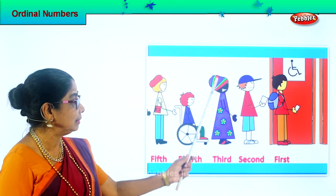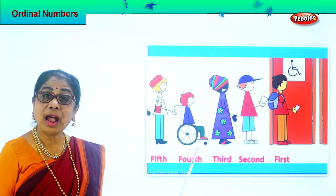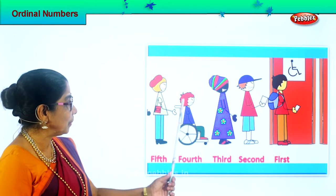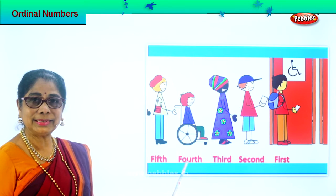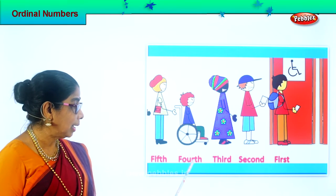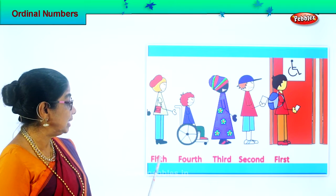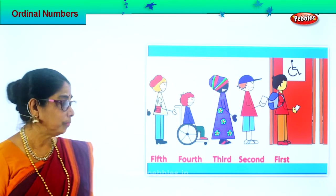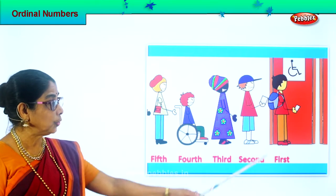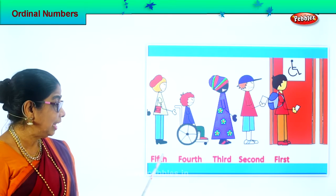Let's look at the third. Spell third: T-H-I-R-D. Third. Let's go on. Look at the fourth person. Spell fourth: F-O-U-R-T-H. Fourth. And finally we have the last person here, the fifth person. Spell fifth: F-I-F-T-H. Fifth. So we have first, second, third, fourth, and fifth.